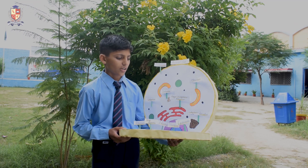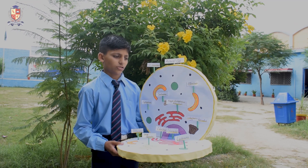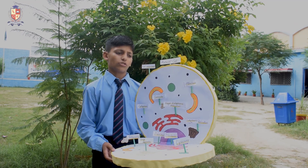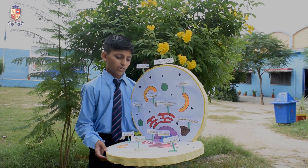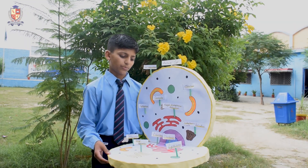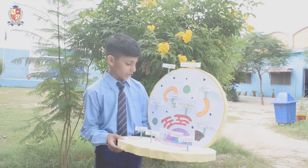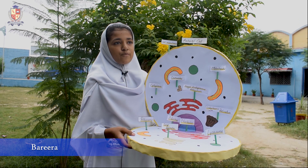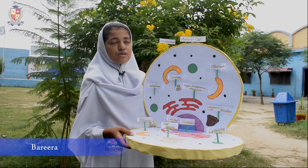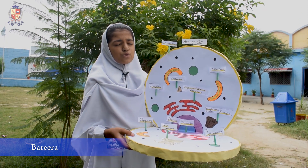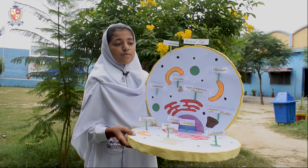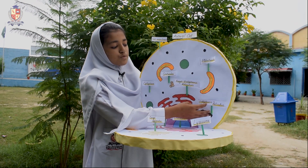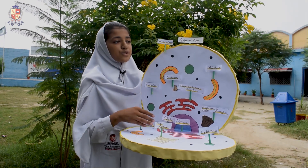Golgi body distributes protein. Lysosome — there are some chemicals that break down material. Endoplasmic reticulum: there are two types — rough endoplasmic reticulum and smooth endoplasmic reticulum.